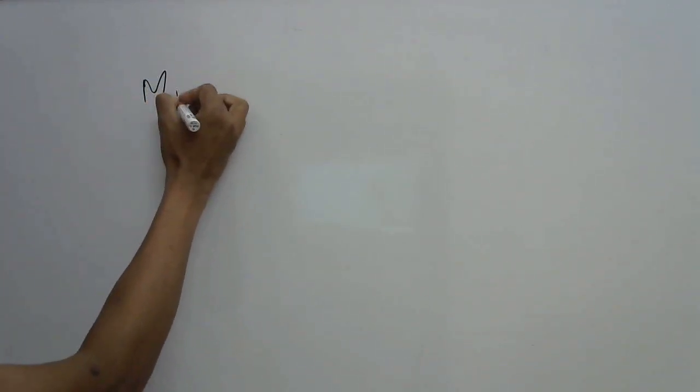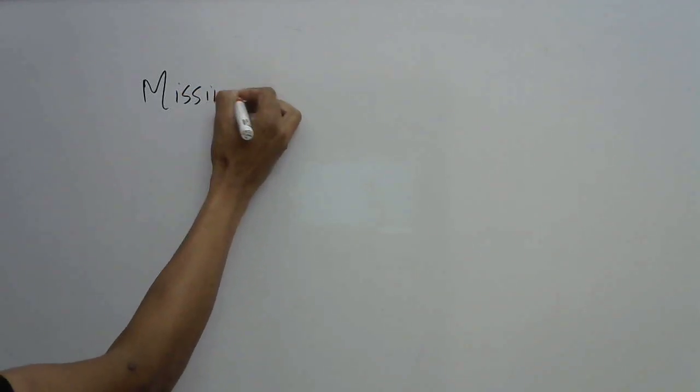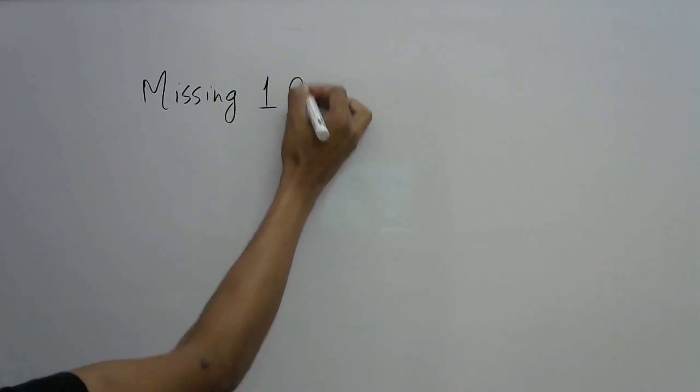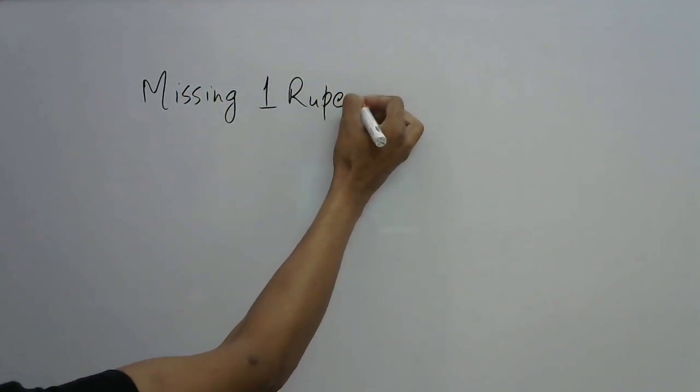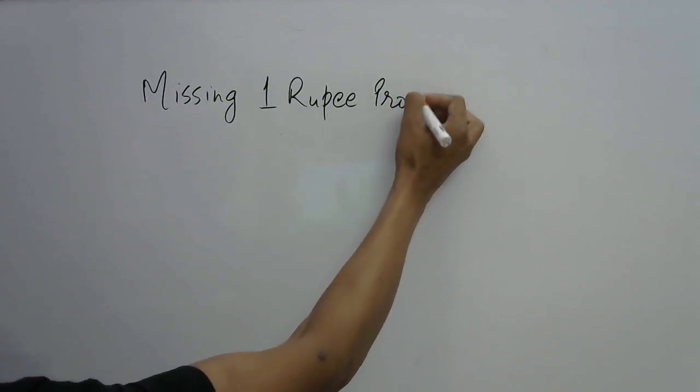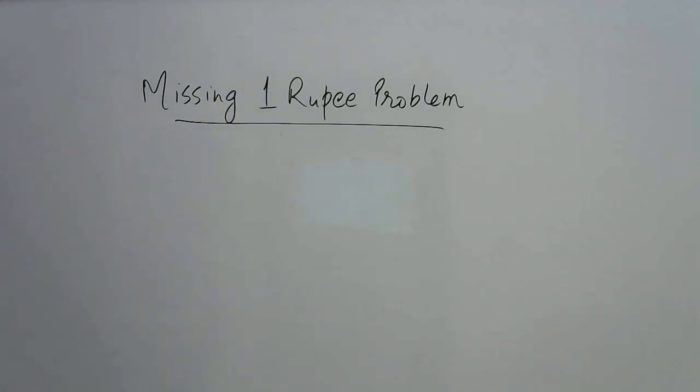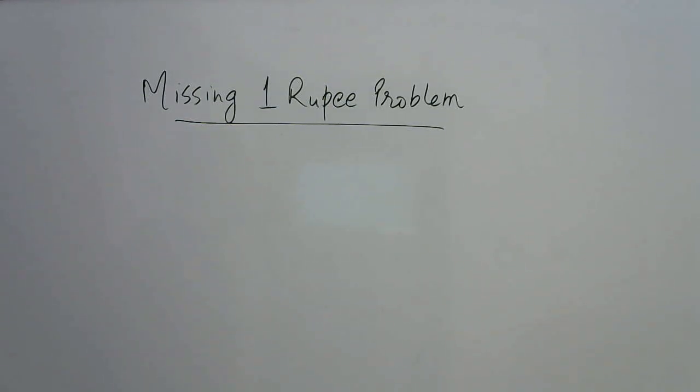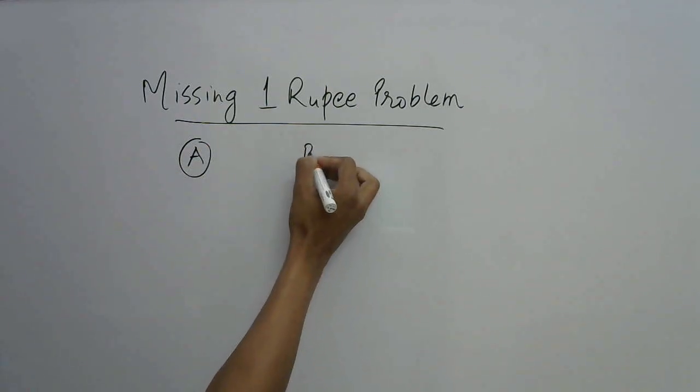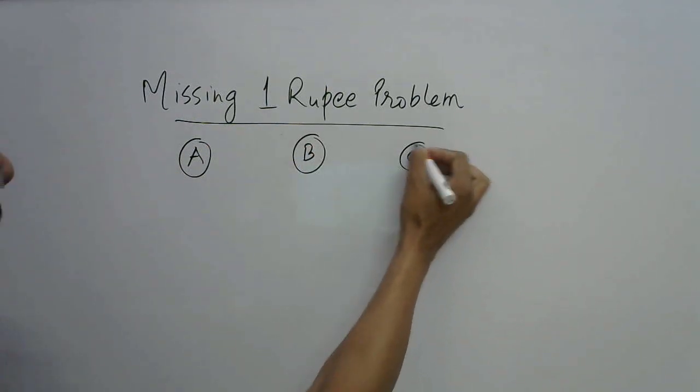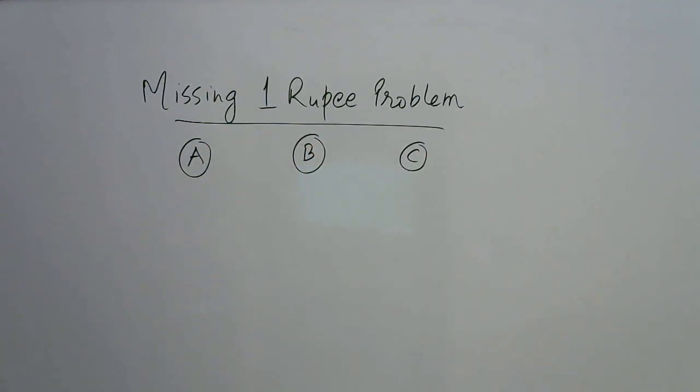So the problem goes like this. It is known as the missing one rupee problem. What happens? One day there are three friends A, B, and C. Now together they want to purchase an item.